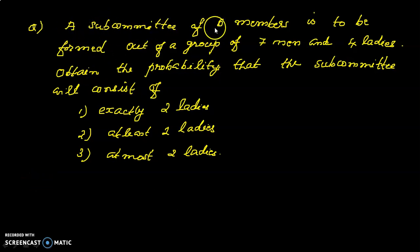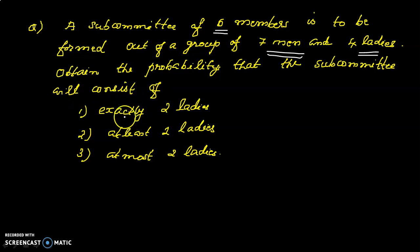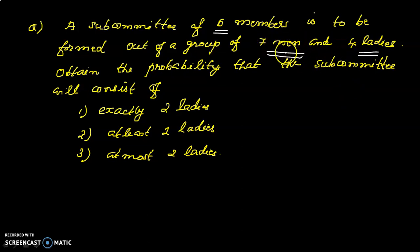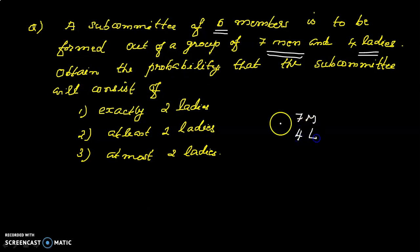A subcommittee of six members is to be formed out of a group of seven men and four ladies. We need to obtain the probability that the subcommittee will consist of exactly two ladies, at least two ladies, and at most two ladies. The total group is seven men and four ladies, giving us eleven members total.